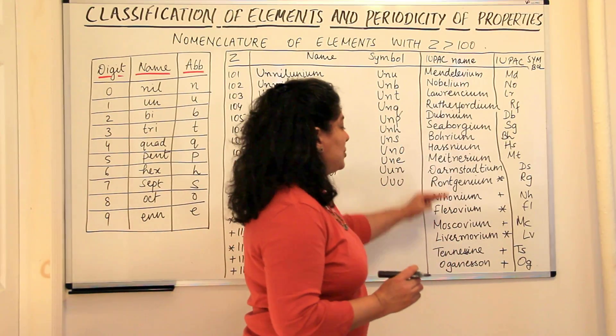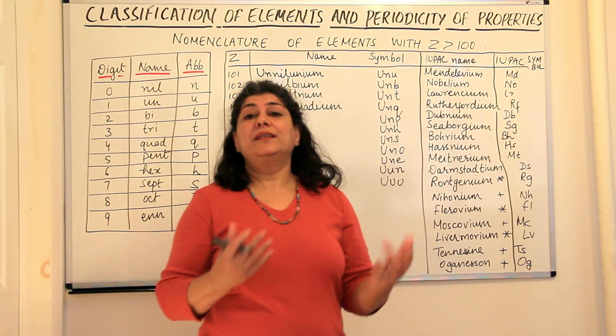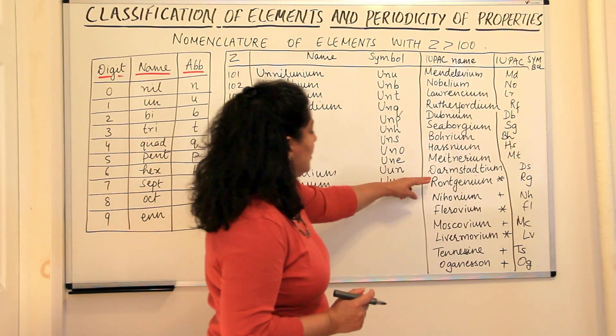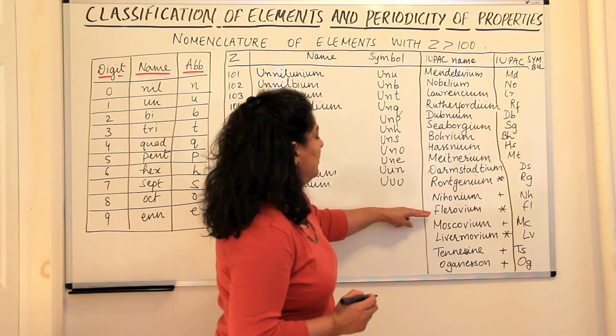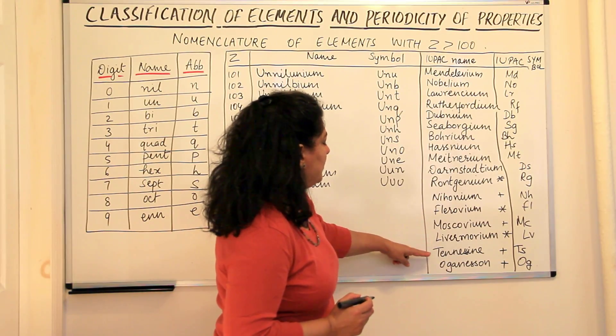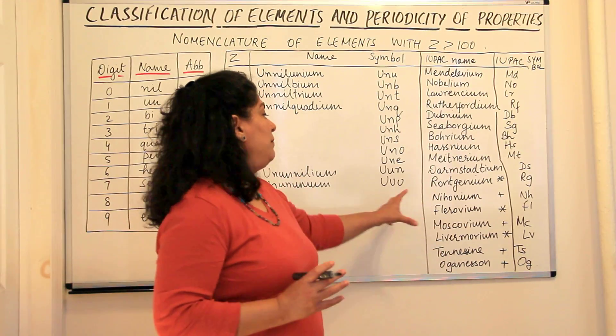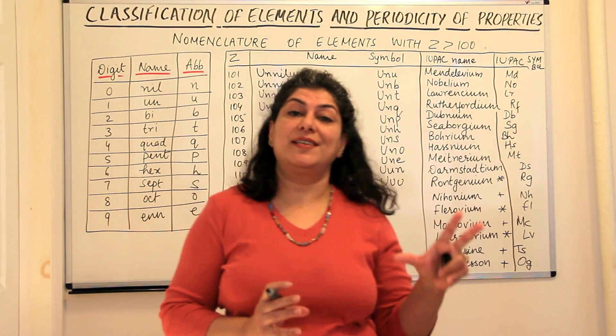The names are again under consideration but these names from 112 onwards, Roentgenium, Nihonium, Flerovium, Moscovium, Livermorium, Tennessine and Oganesson. These are the names which are still being considered.